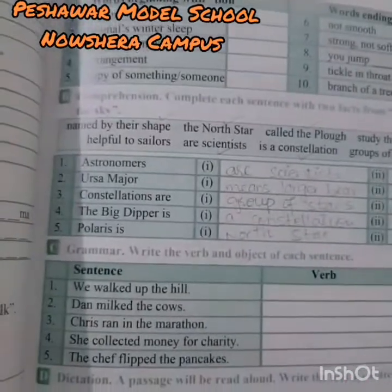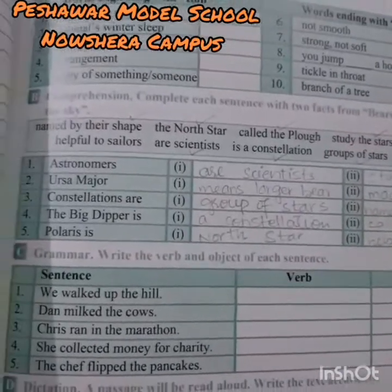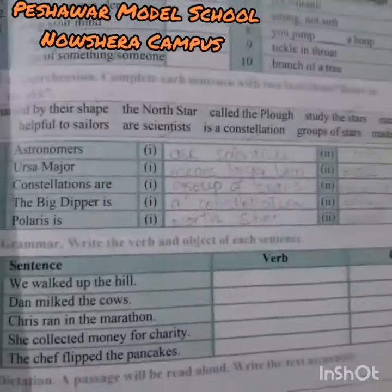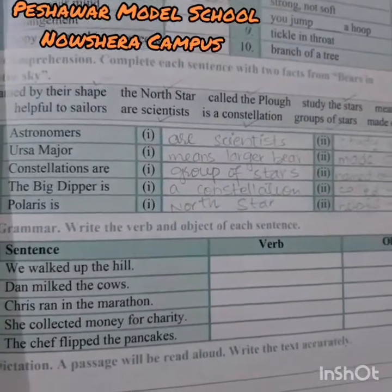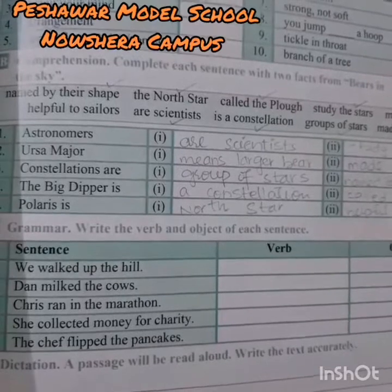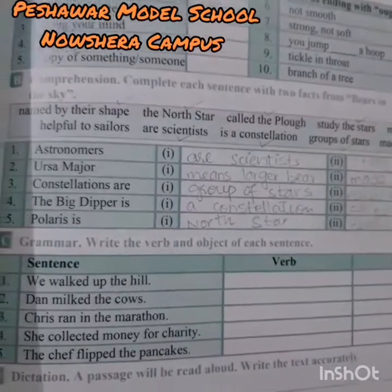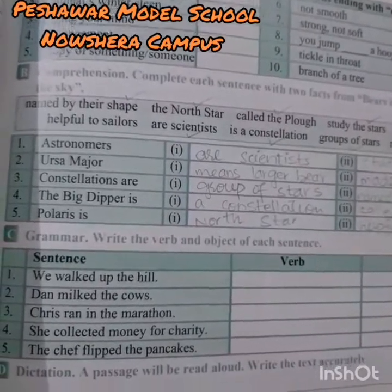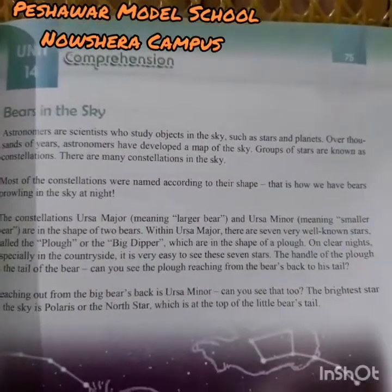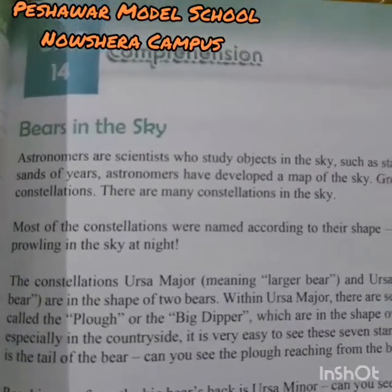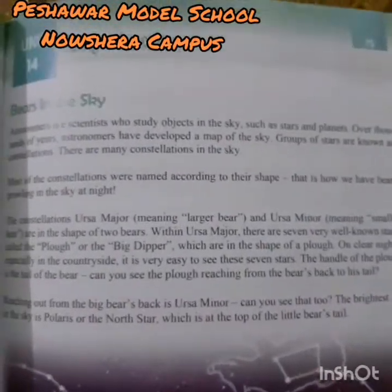I have already done this question for you. First I will read the first word, then we will go to page number 74 where we will read about astronomers and find the statements. First, look at the name of the unit — 'Bears in the Sky.' Have you ever heard that bears are in the sky?